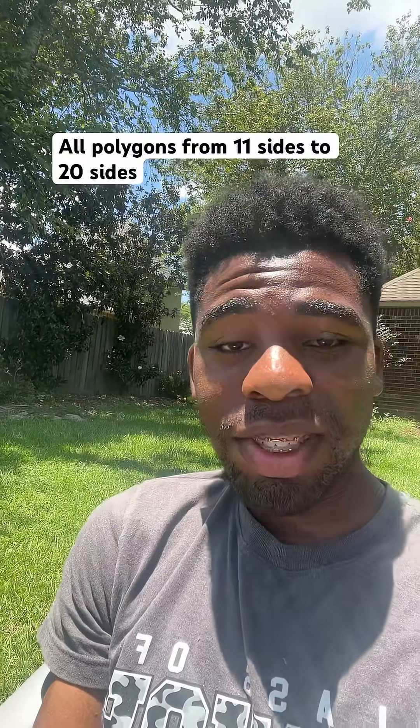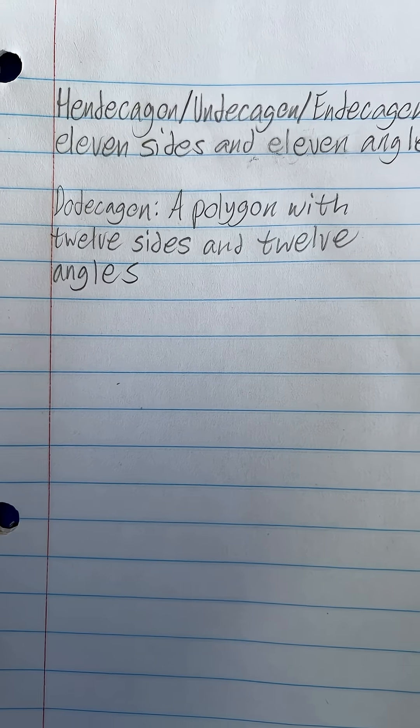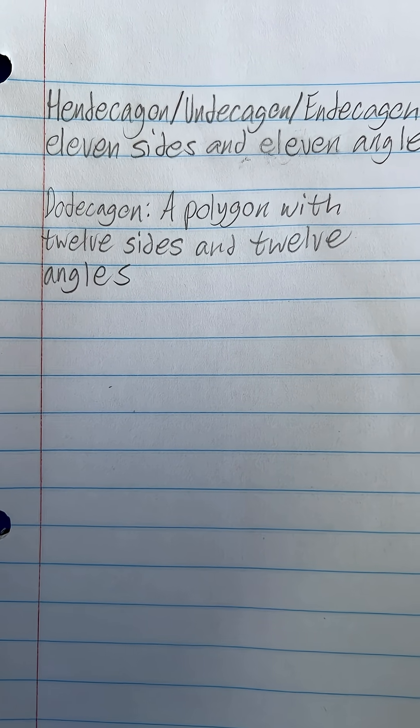All right, here's all the polygons from 11 sides to 20 sides. A hendecagon or undecagon or endecagon is a polygon with 11 sides and 11 angles. I ain't even gonna try to draw these out. A dodecagon is a polygon with 12 sides and 12 angles.